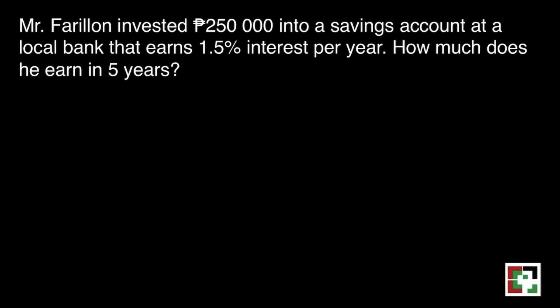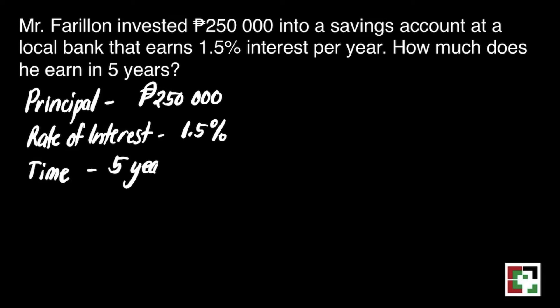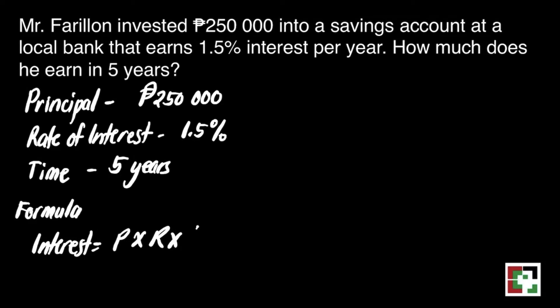We have the next problem. Mr. Farillion invested 250,000 pesos into a savings account at a local bank that earns 1.5% interest per year. How much does he earn in 5 years? It is better if we identify our principal, the rate of interest, and the time. The principal is 250,000 pesos, the rate is 1.5%, and the time is 5 years. We will still use the same formula: interest is equal to principal times rate times time.